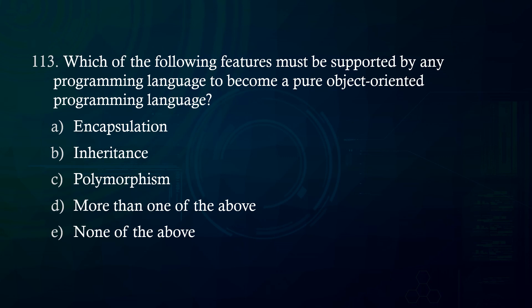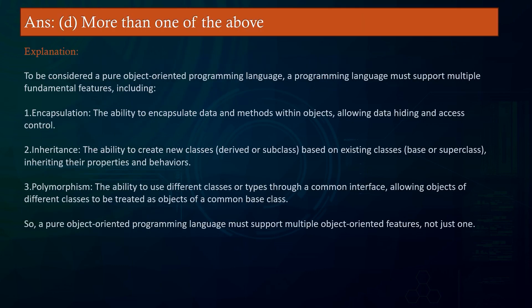Which of the following features must be supported by any programming language to become a pure object-oriented programming language? A. Encapsulation. B. Inheritance. C. Polymorphism. D. More than one of the above. E. None of the above. Answer: More than one of the above. Explanation: A pure OOP language must support encapsulation (binding data and methods within objects with data hiding), inheritance (creating new classes based on existing ones), and polymorphism.